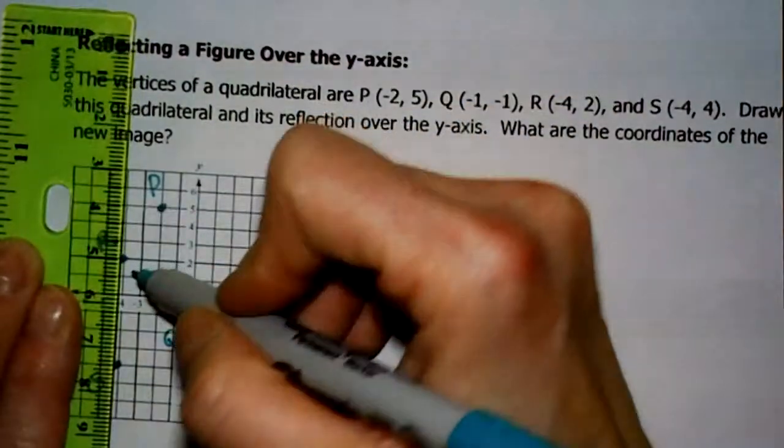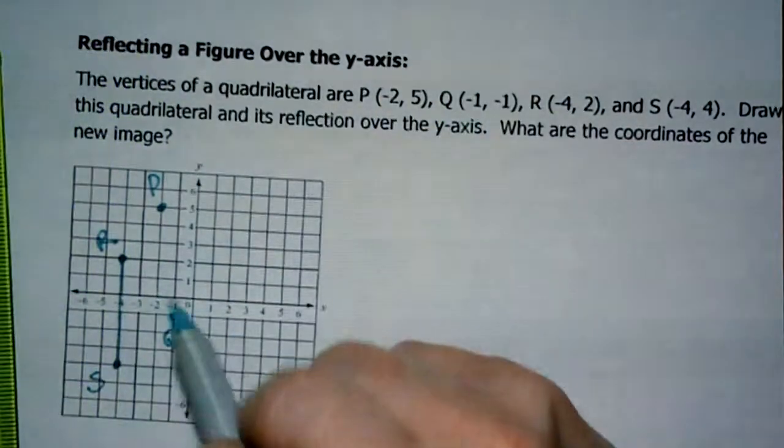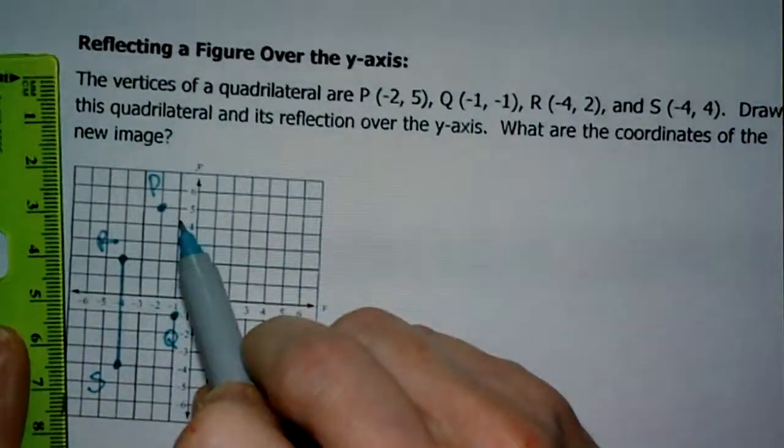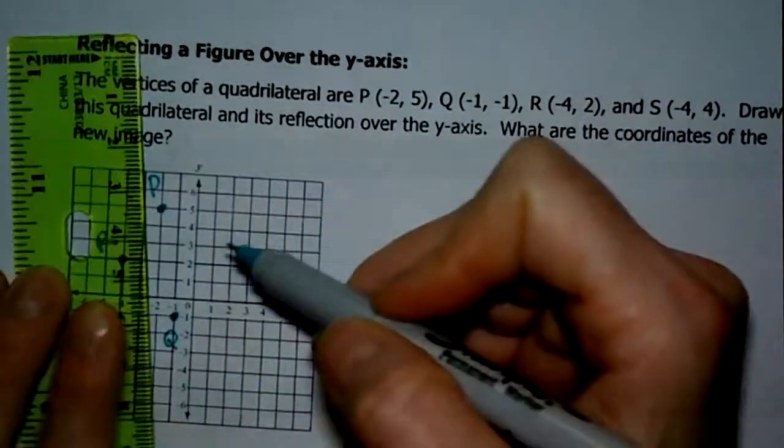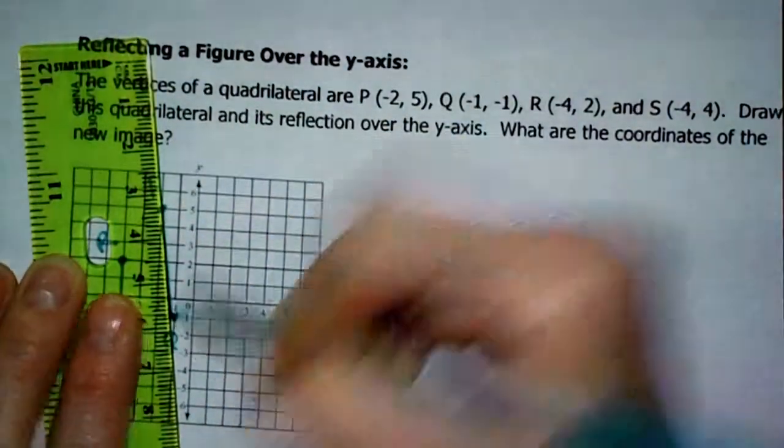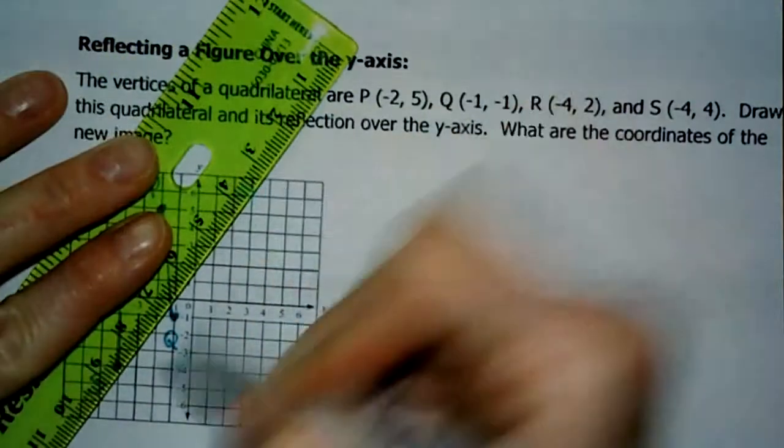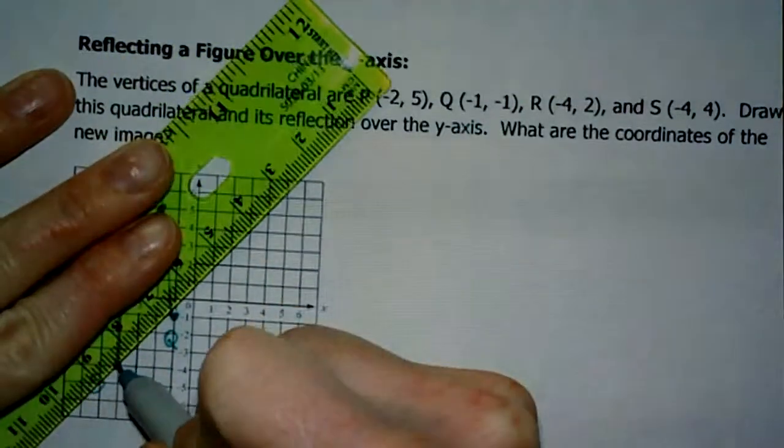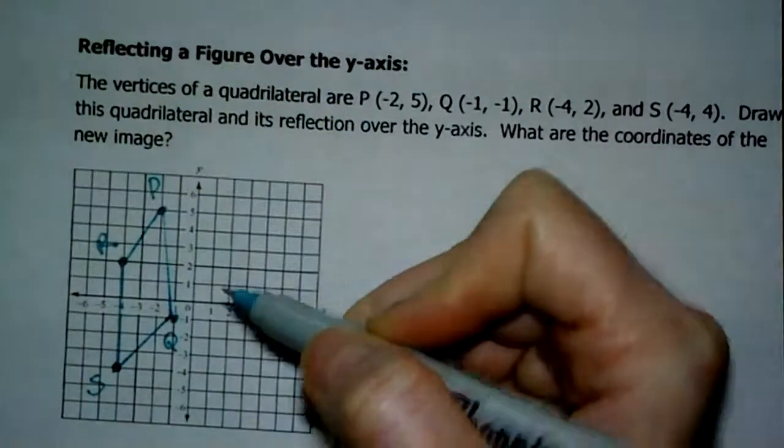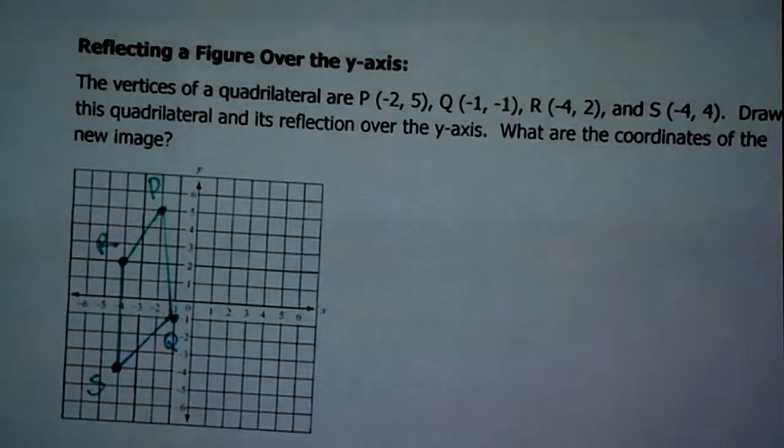All right. Let's connect these vertices. It's kind of a fun word to say. Did I just do something wrong here? Let me see. Negative two, five. No. I just had in my mind that it was going to be a perfect little parallelogram, but it's okay that it's not. There it is.